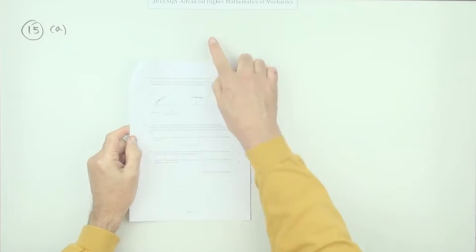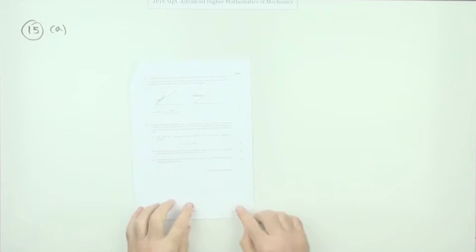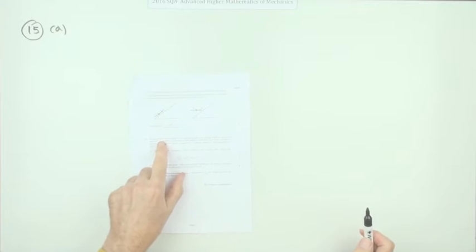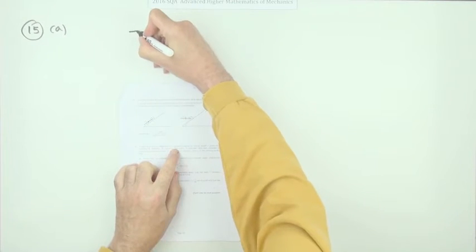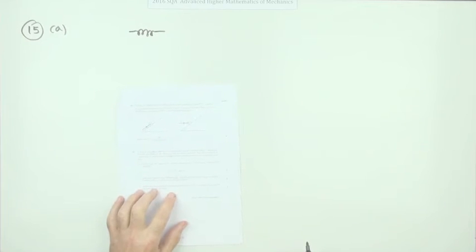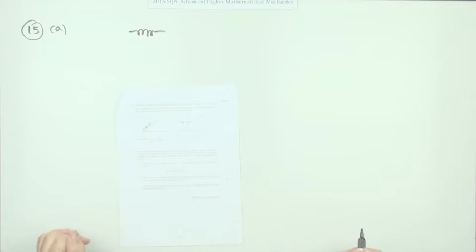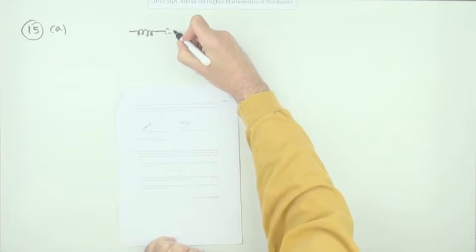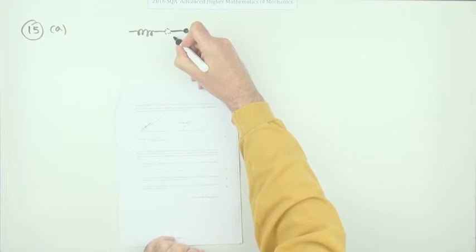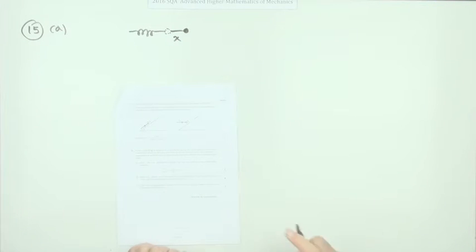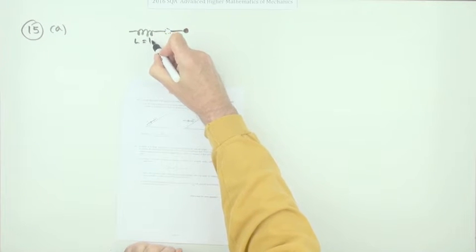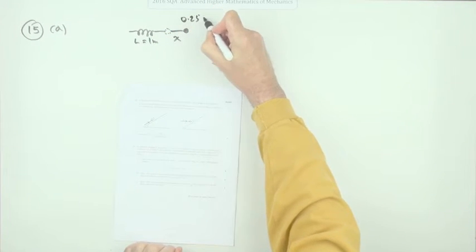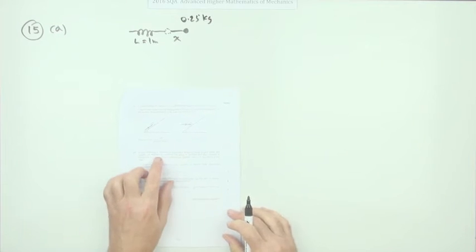Question 15 from the 2016 Advanced Higher Mathematics mechanics paper — the first of the big marks, 11 marks for this question. A mass of a quarter of a kilogram is attached to a horizontal spring of natural length one meter and a modulus of elasticity of 20 newtons. The spring is stretched and then released, stretched by x, with a natural length of one meter and mass of a quarter kilogram.